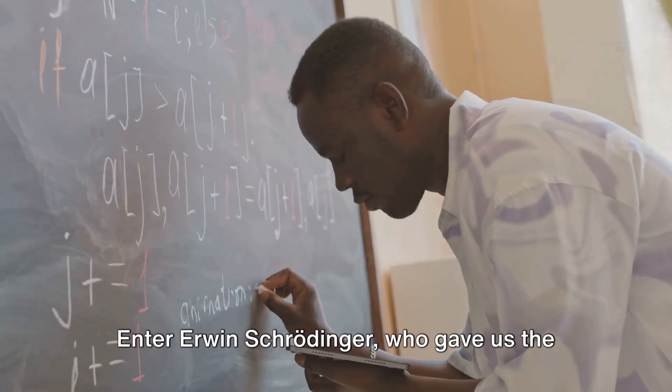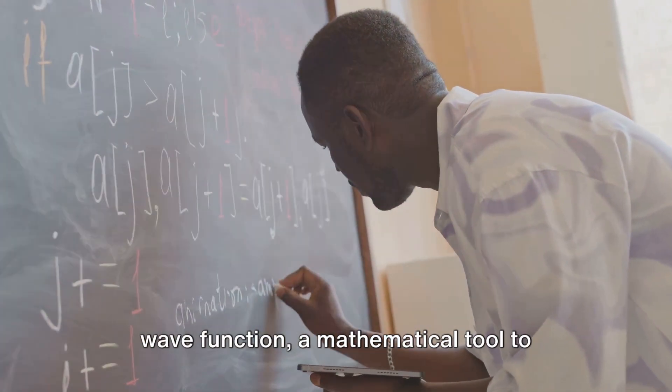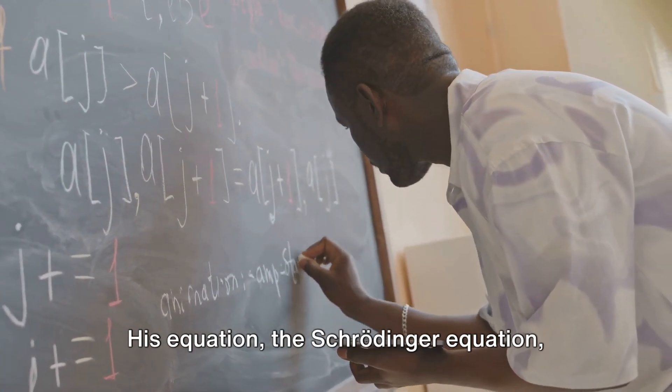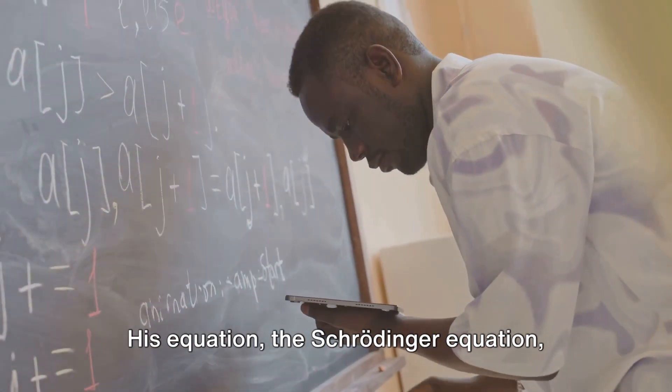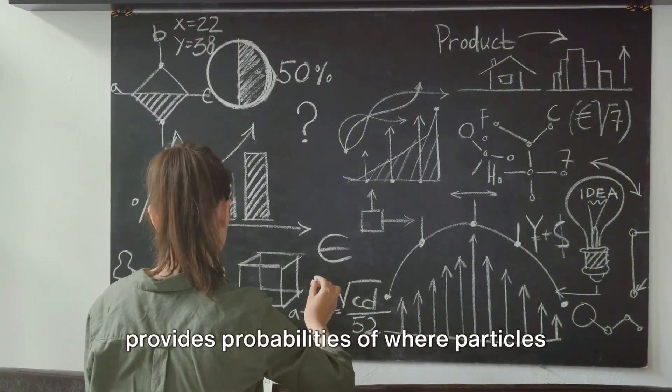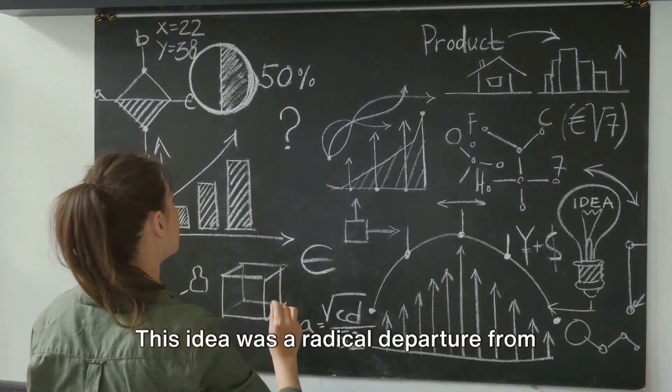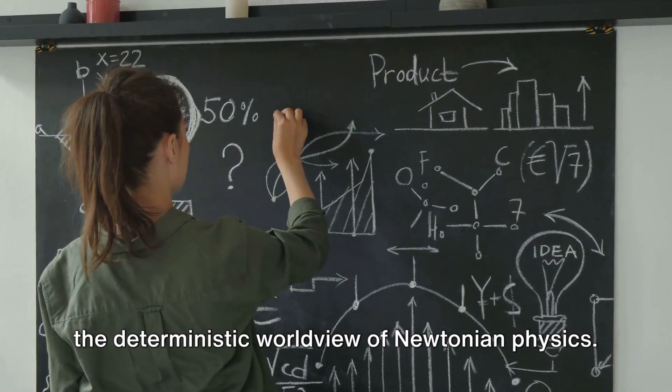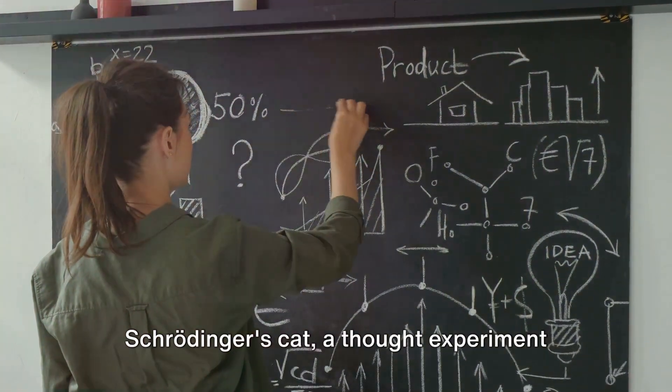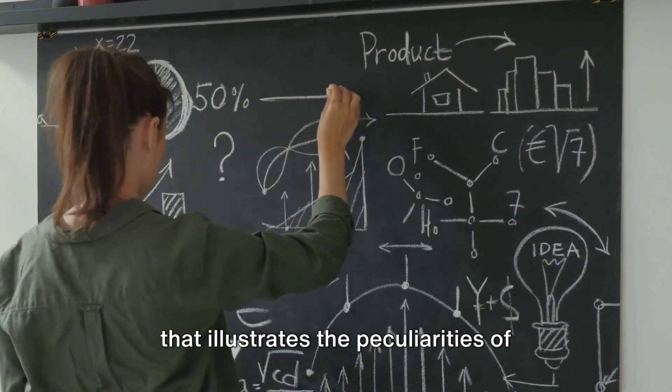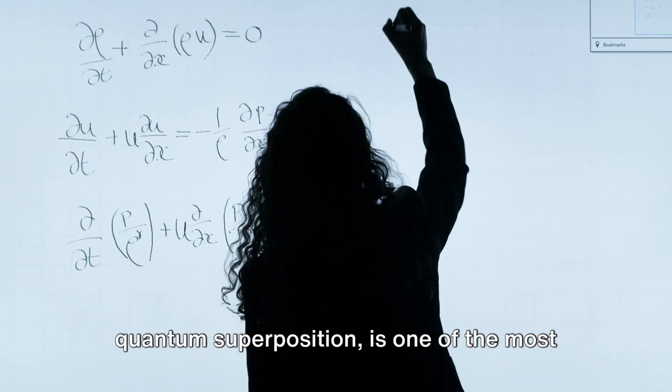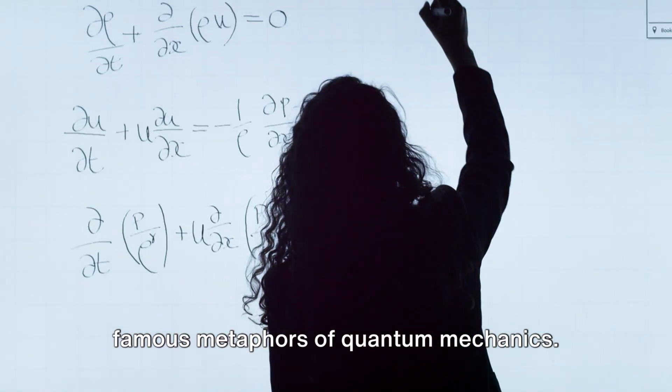Enter Erwin Schrödinger, who gave us the wave function, a mathematical tool to describe the state of quantum systems. His equation, the Schrödinger equation, provides probabilities of where particles might be found. This idea was a radical departure from the deterministic worldview of Newtonian physics. Schrödinger's cat, a thought experiment that illustrates the peculiarities of quantum superposition, is one of the most famous metaphors of quantum mechanics.